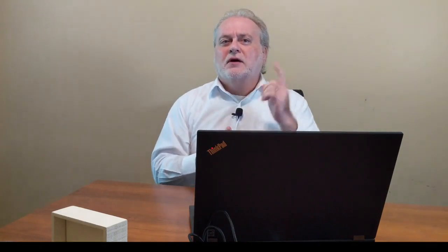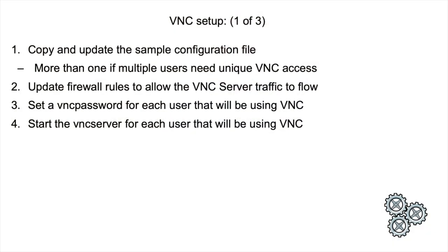Once the VNC server package is installed, some configuration is required. The configuration boils down to basically four steps: first, copy and update the sample configuration file — possibly more than one if multiple users need unique VNC access; second, update the firewall rule to allow VNC server traffic to flow; third, set a VNC password for each user; and fourth, start the VNC server for each user that will be using VNC.